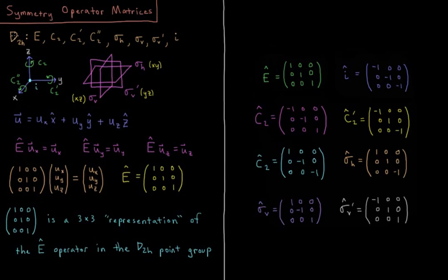So if we look at the D2H point group as an example, there are eight total symmetry elements and symmetry operations. We have E, C2, C2 prime, C2 double prime, sigma H, sigma V, sigma V prime, and I.